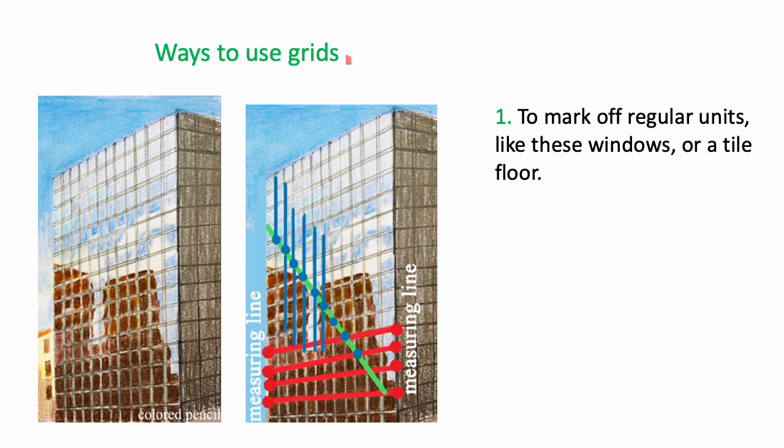So one way to use a grid is to mark off regular units like these windows or tile floor. And here again, I have two measuring lines, so I don't have to deal with the vanishing point.